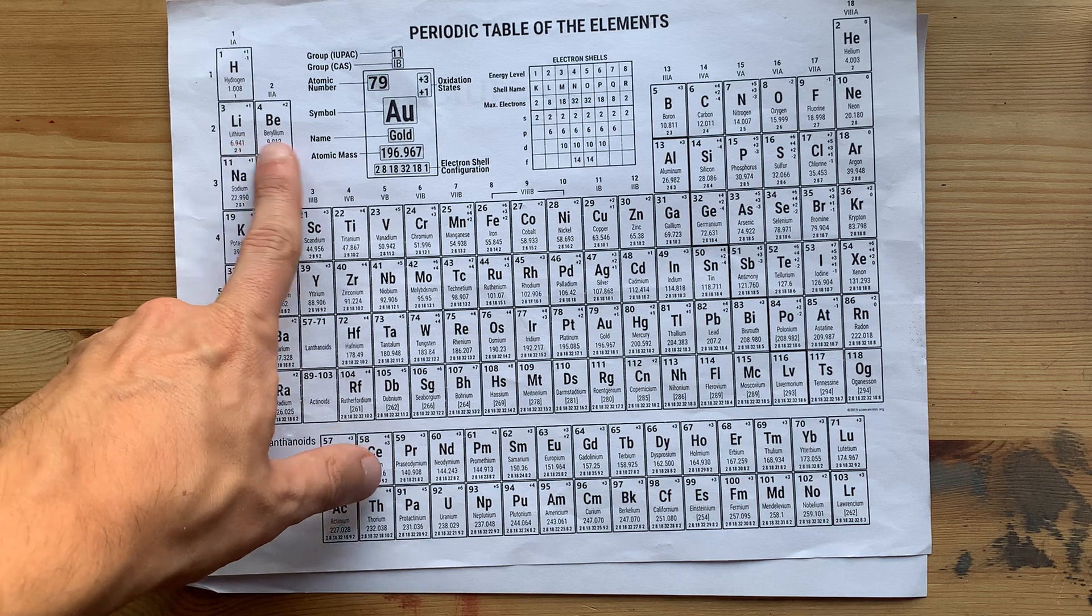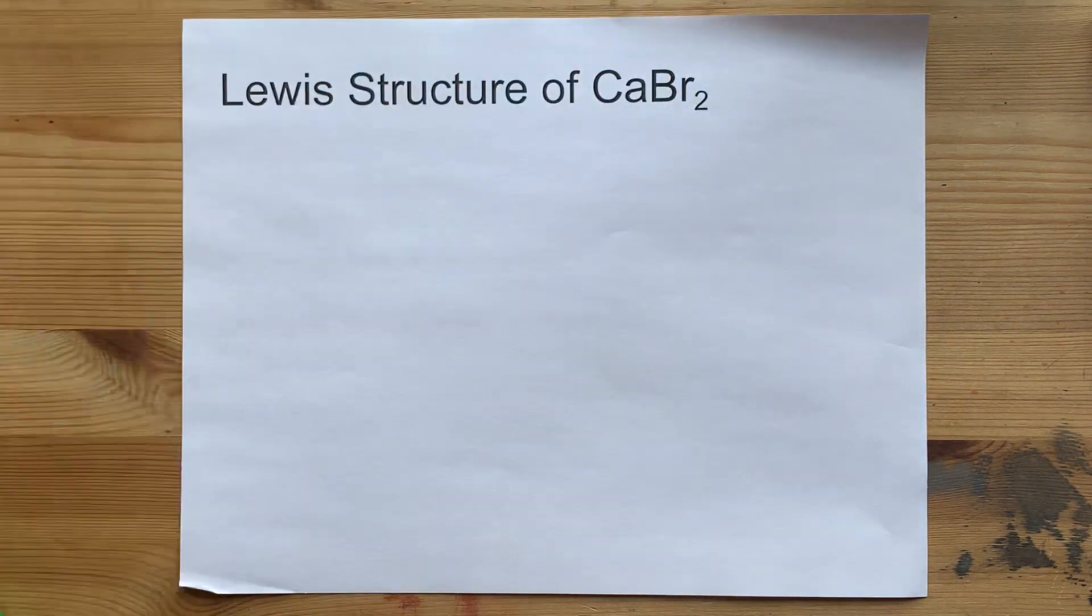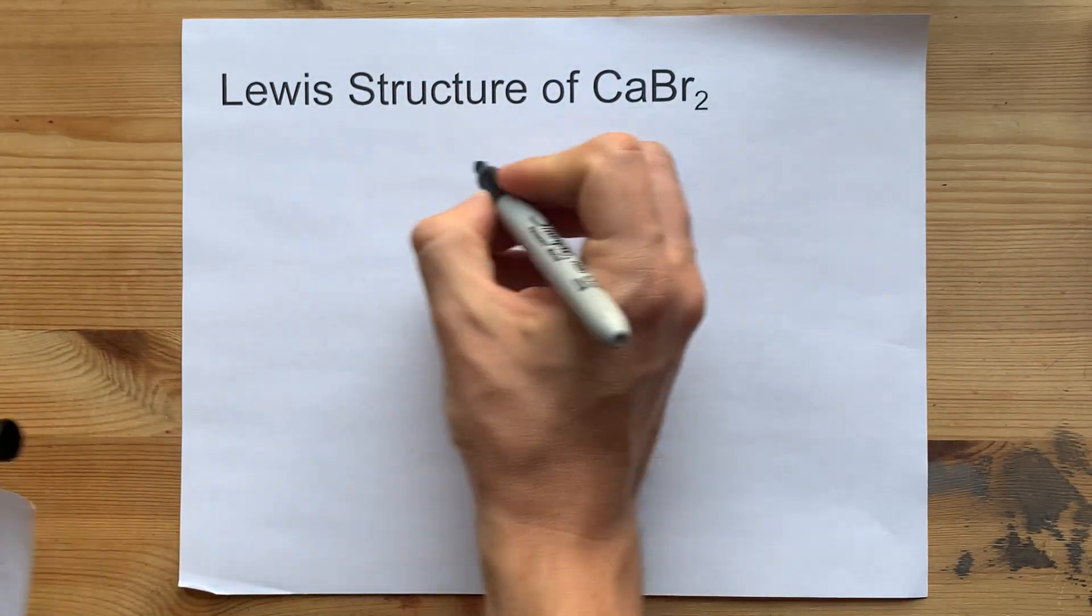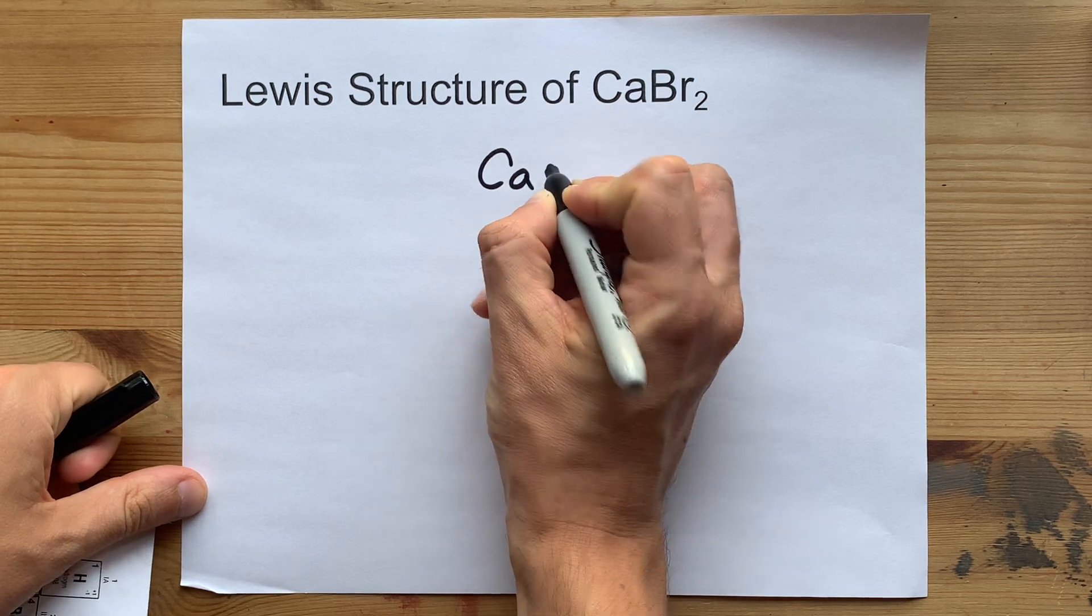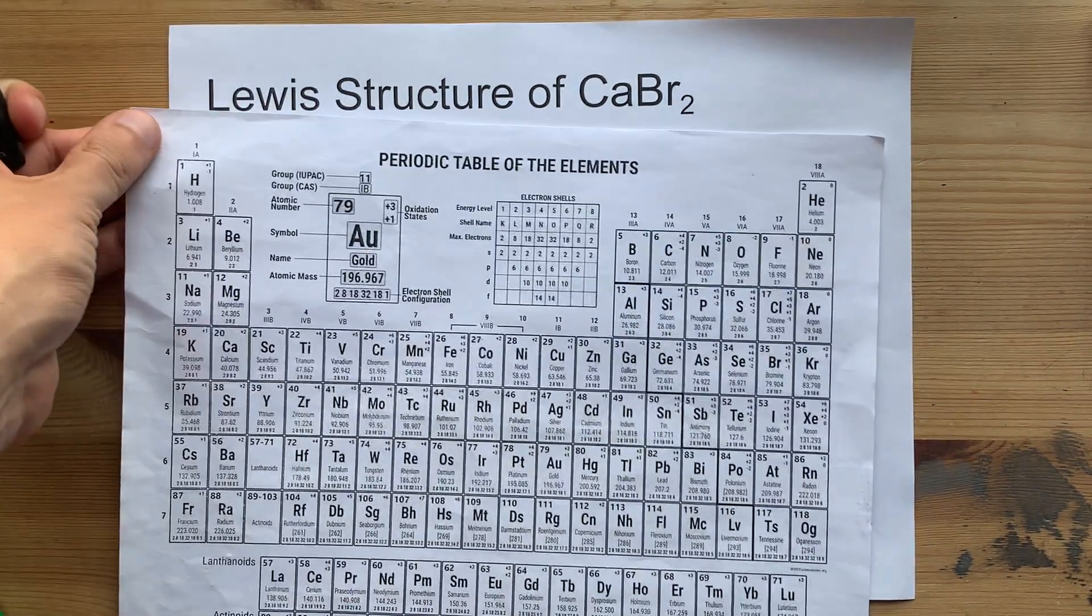Calcium is in the second column, so it brings two valence electrons with it. Ca, one, two valence electrons. Beautiful.